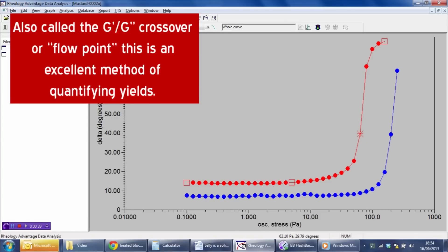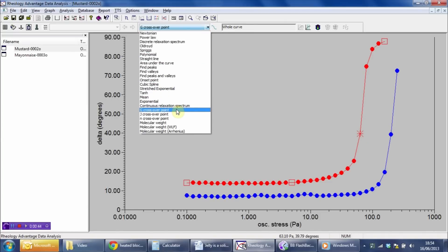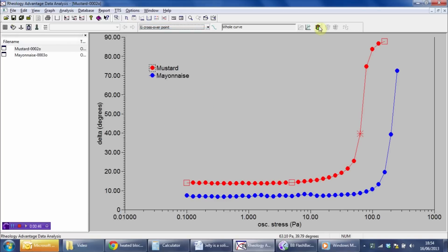And it's really easy to do that in this software. You click on the curve, and from this box of available analysis here, we select what we call G crossover point. We hit the traffic light, and the software will report our interpolated yield stress value. It's coming in here at 69.49 Pascals for the mustard. Let's do the same thing for the mayonnaise. The mayonnaise is coming in at 217.1 Pascals, significantly higher than that of the mustard.